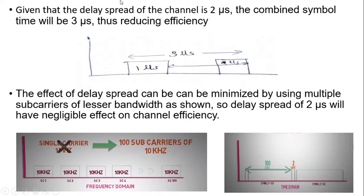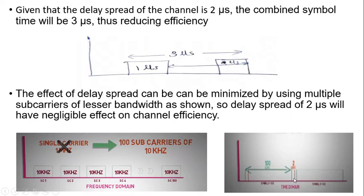The extended symbol time may also lead to inter-symbol interference. In the 2 microsecond delay spread case, it occupies part of the combined symbol time and reduces channel efficiency. The effect of delay spread is difficult to control, and can be minimized only with the help of multiple carriers. So instead of using a single carrier of 1 MHz, we can use 100 subcarriers of 10 kHz, giving each symbol a duration of 100 microseconds.